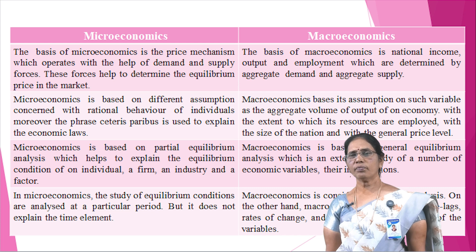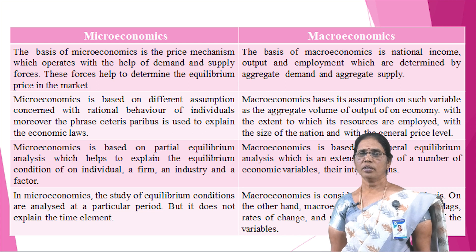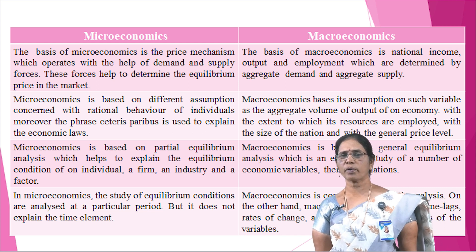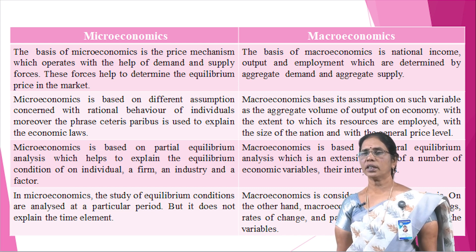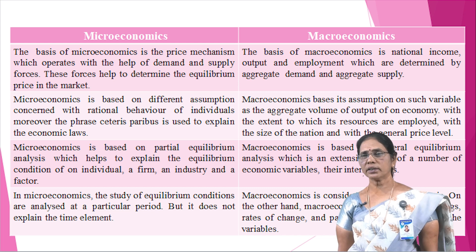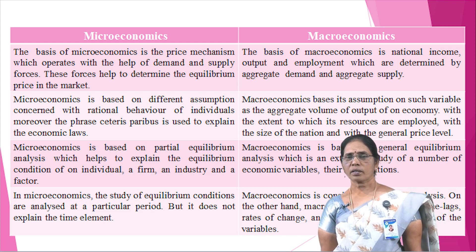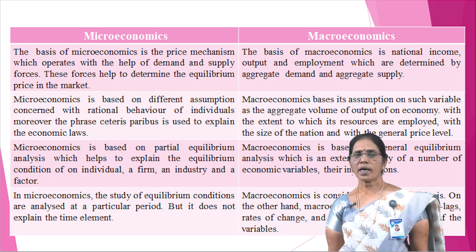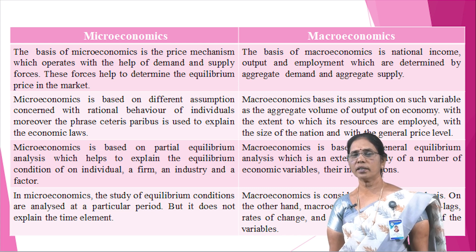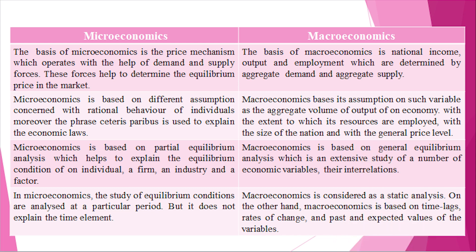Microeconomics is based on assumptions concerning the rational behaviour of individuals; the phrase 'ceteris paribus' is used to explain economic laws. Macroeconomics bases its assumptions on variables such as the aggregate volume of output of an economy, the extent to which its resources are employed, the size of the national income, and the general price level. Microeconomics is based on partial equilibrium analysis explaining equilibrium conditions of an individual, a firm, an industry and a sector. Macroeconomics is based on general equilibrium analysis — an extensive study of a number of economic variables and their interrelations.